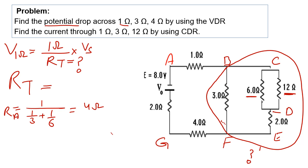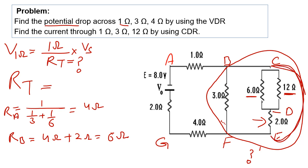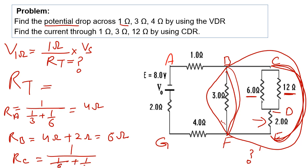This 2 ohm is in series with the 4 ohm resistor. So Rb = 4 ohm + 2 ohm = 6 ohm. Now the resistance from c to e is in parallel with b to f. So Rc: 1/Rc = 1/6 + 1/3, which gives Rc = 2 ohm.